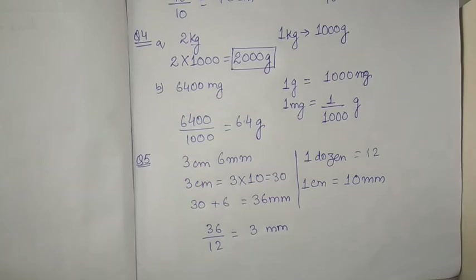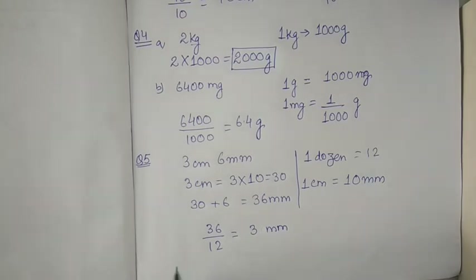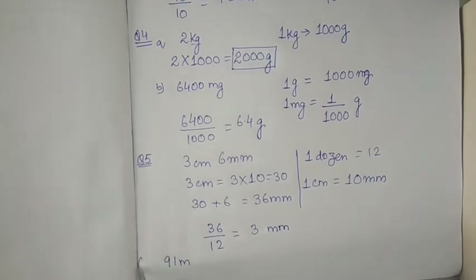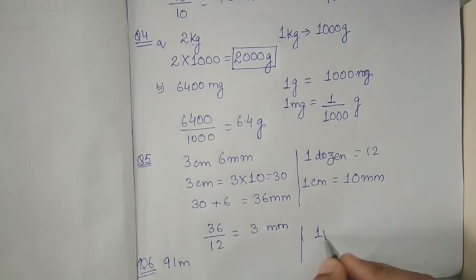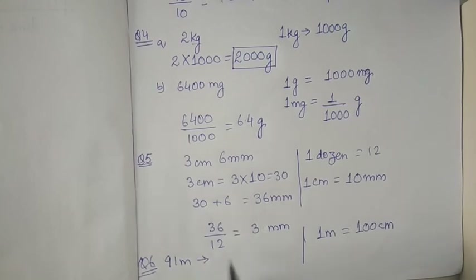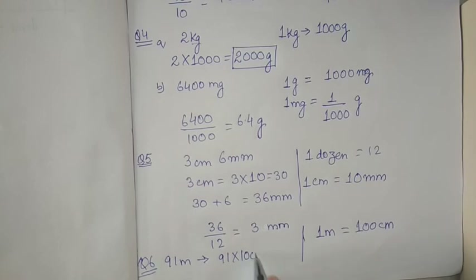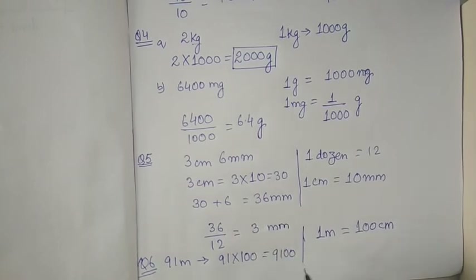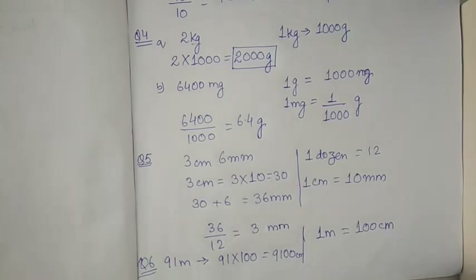Question number six: one of the tallest trees in the world is the redwood, and its height measures 91 meters. We have to express its height in centimeter and feet. We know 1 meter equals 100 centimeter, so we multiply 91 by 100 and get 9100 centimeter.